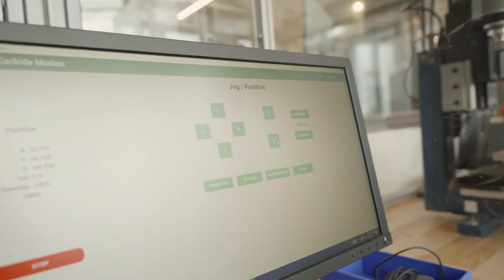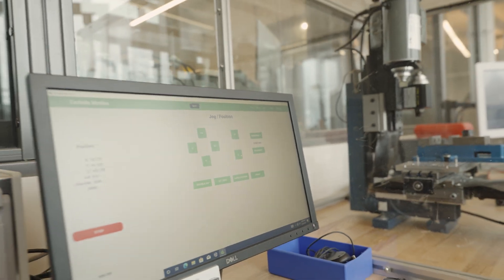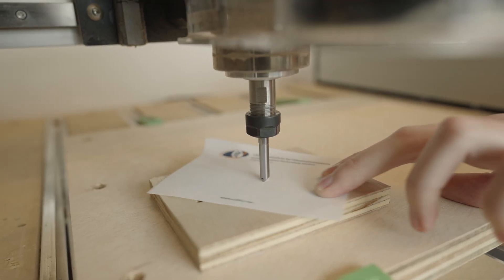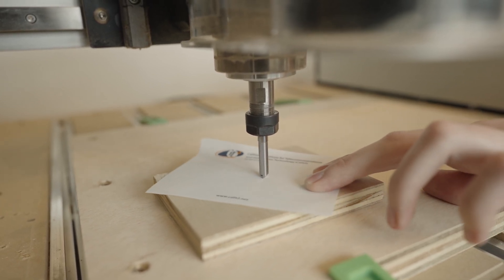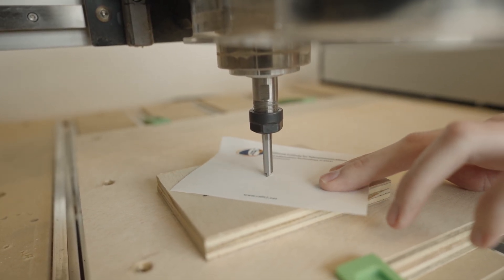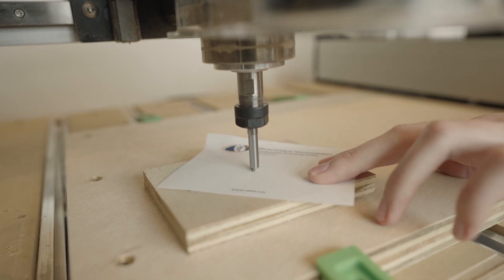And then when we're doing that, we generally use the smallest increment setting, which is going to be 0.025 millimeters. So as you can see, I'm wiggling the paper as I increment the tool down. As soon as the tool catches, I'm going to stop and then set my zero in the computer.